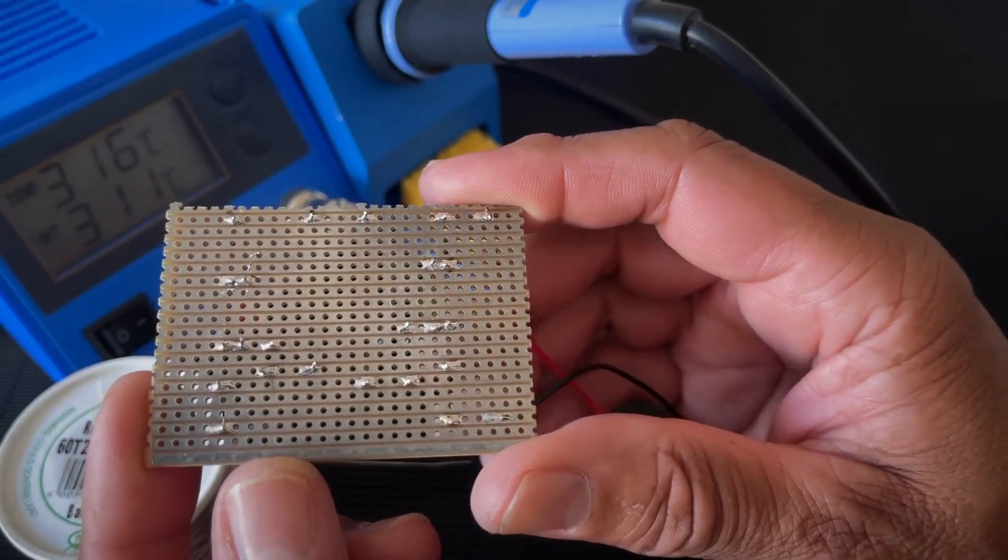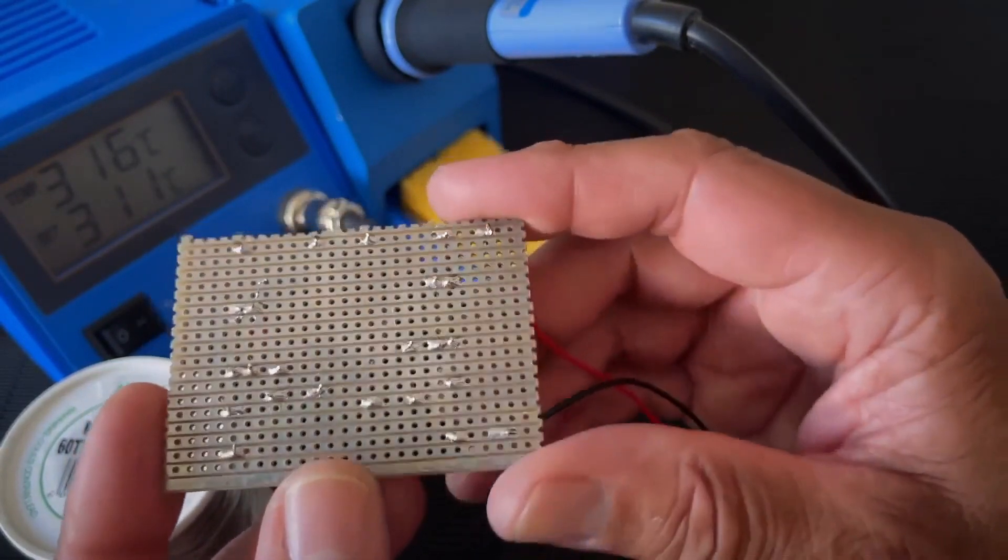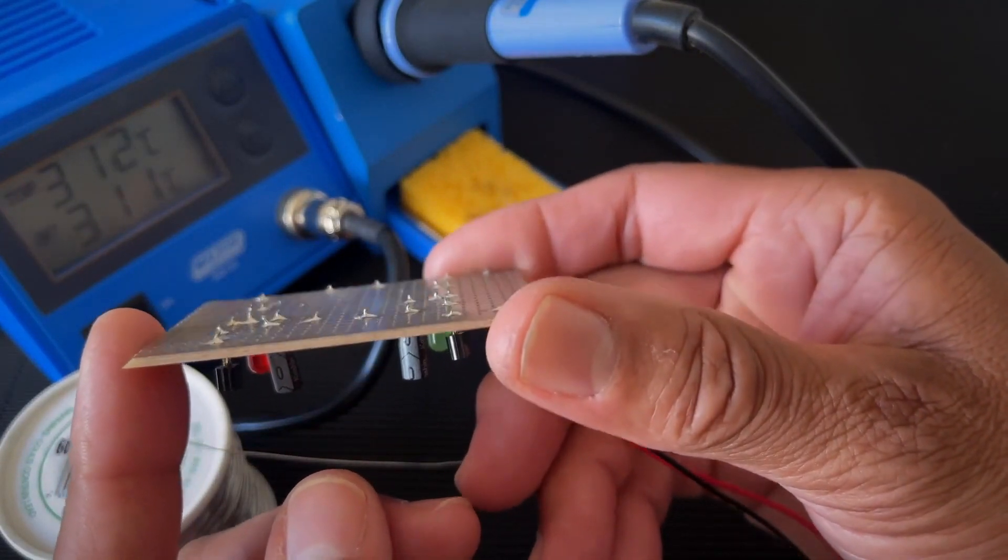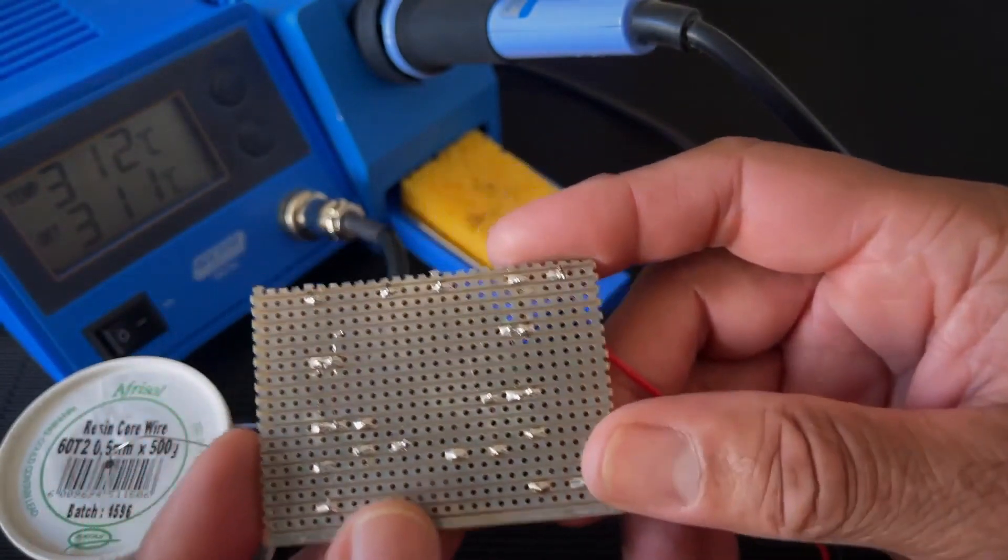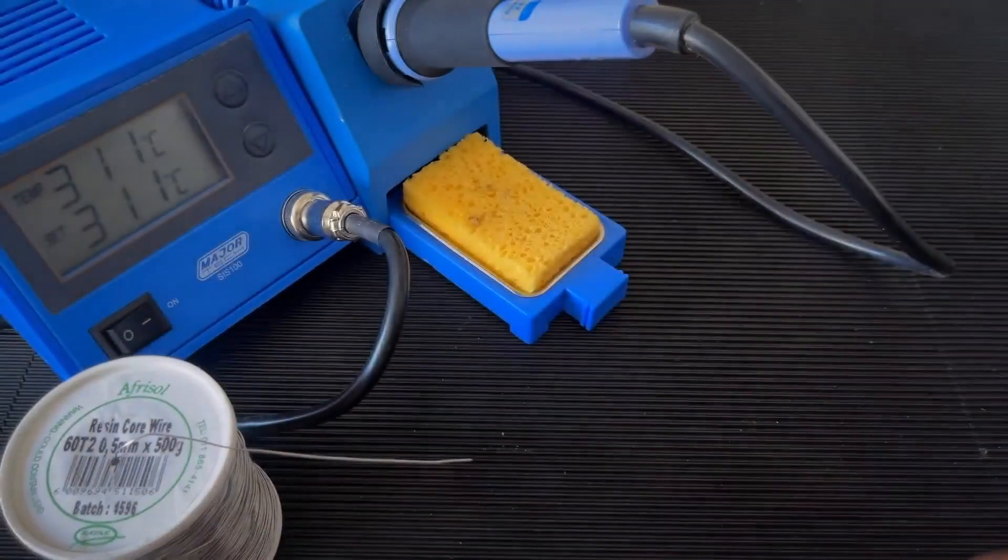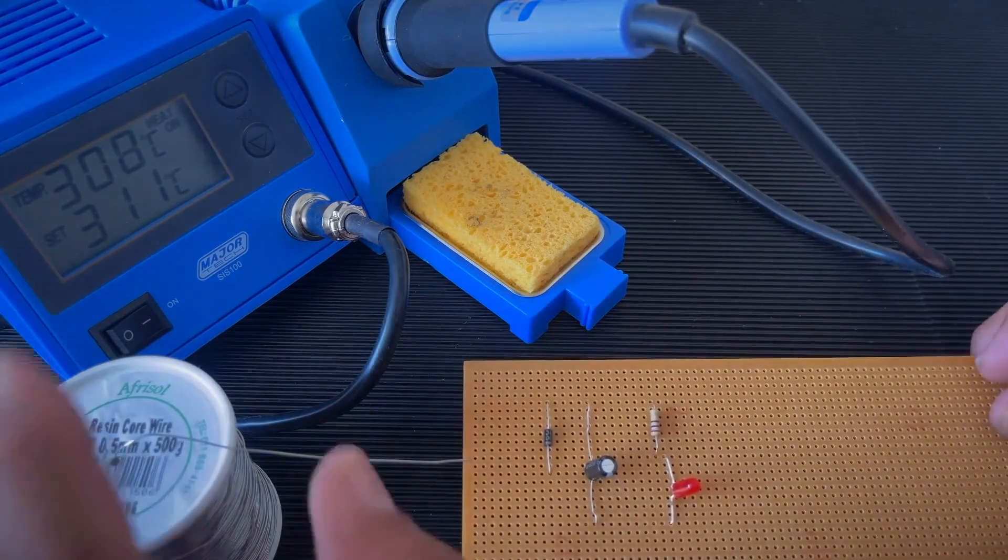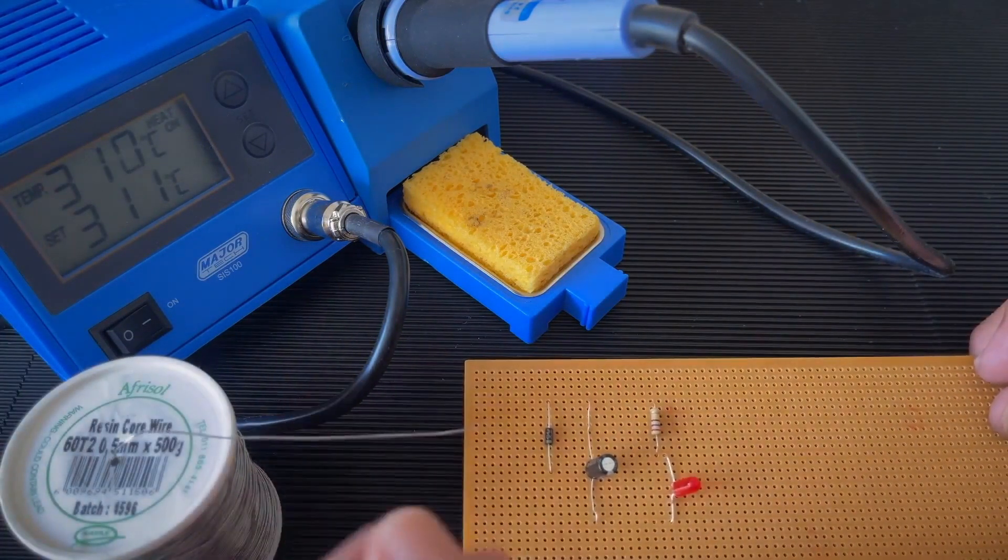As you can see there's an example of the track side of the Vero board. So I've got in the background there some soldering wire, standard entry-level machine and sponge.